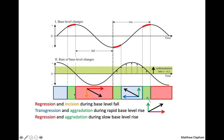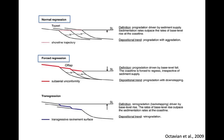At some points in time, even during base level rise, if we still have too much sedimentation happening too fast, it can still look like a regression — a relative sea level fall. That's because there are two different types of regressions.